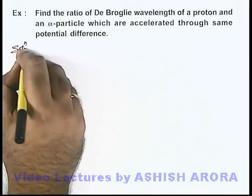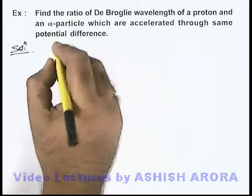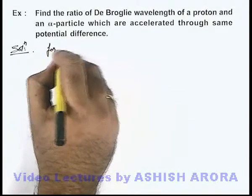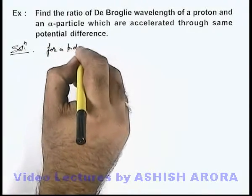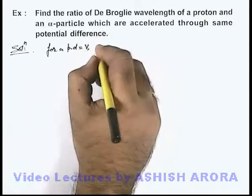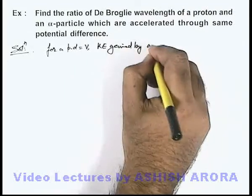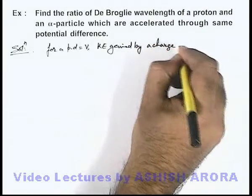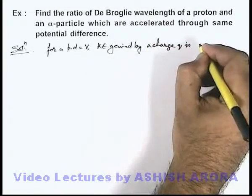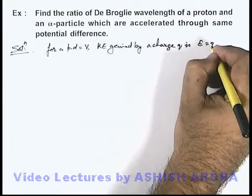In this situation, we can see that for a potential difference equal to V, the kinetic energy gained by charge q is—we know this kinetic energy can be written as qV.